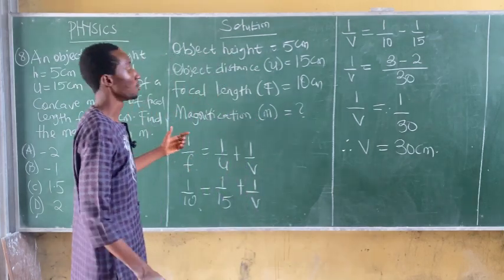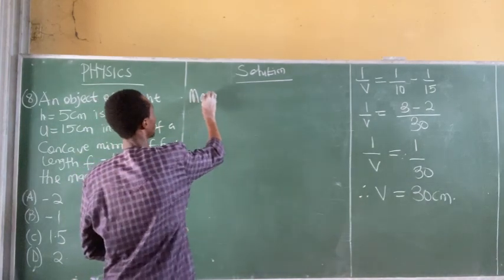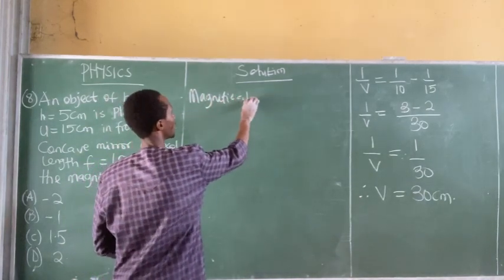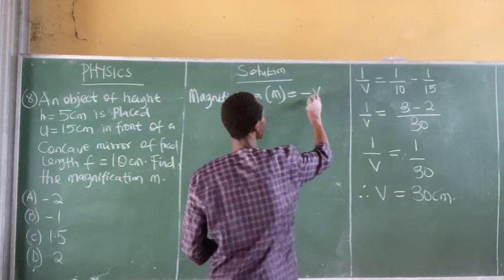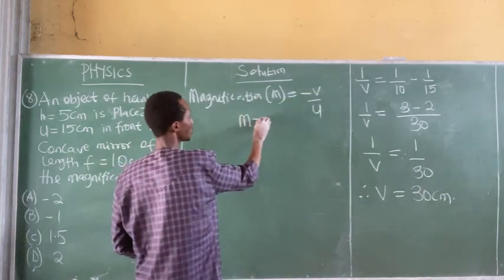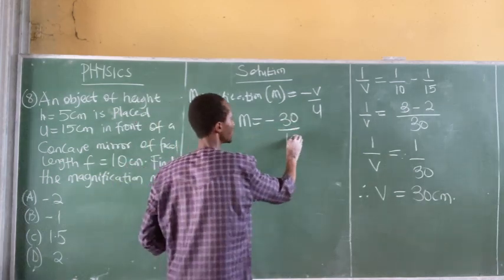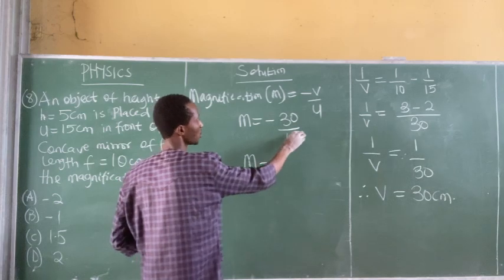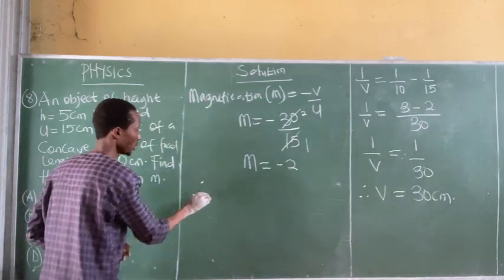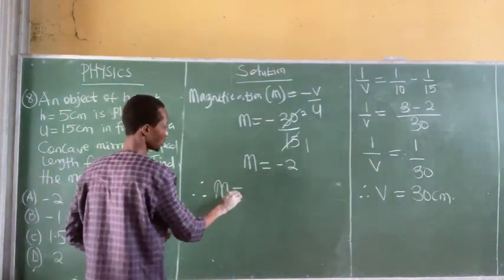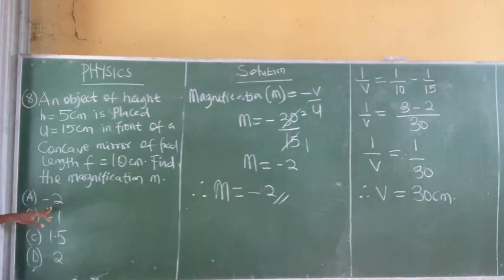We have found the image distance, but we need to find the magnification. Magnification M is given by the formula minus V over U. So M equals minus 30 divided by 15. 30 divided by 15 gives us 2, so M equals minus 2. Therefore, the magnification is minus 2, and the correct option is Option A, minus 2.